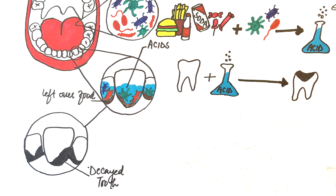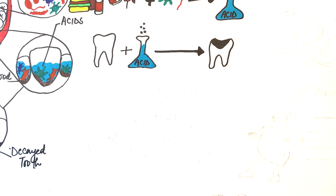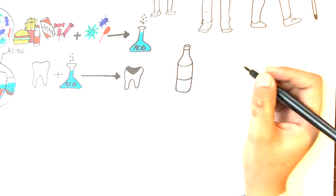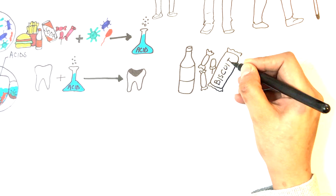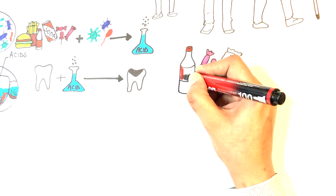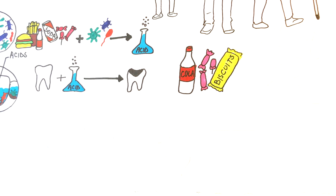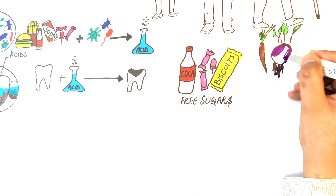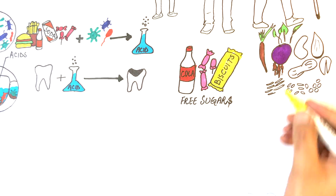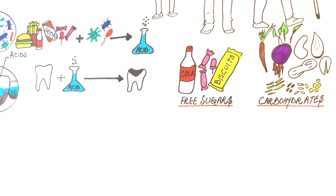The amount of acids produced is based on what we eat and how much sugar we consume. In certain foods like carbonated drinks, candies, and biscuits, sugars are present in their free form. However, in certain foods like vegetables, nuts, and different grains, sugars are present in the form of carbohydrates. The carbohydrates present in these foods are broken down into sugars with the help of certain enzymes present in our oral cavity and eventually are used as a source of energy for the living bacteria.